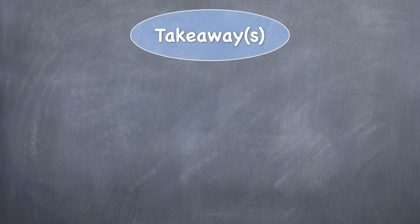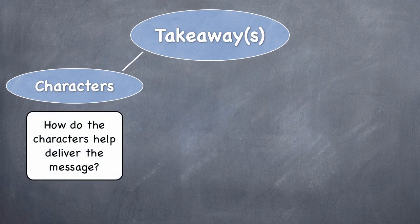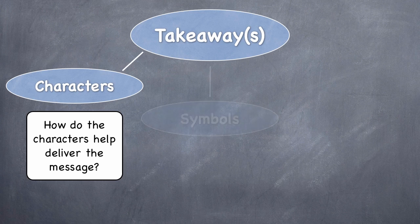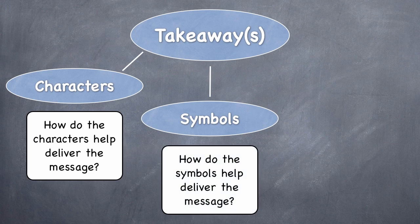So let's say, for example, we could use characters to discuss the takeaway or takeaways. We could use characters and this section would deal with the question: How do the characters help deliver the message? Because the takeaway is really the message, and that's exactly the question we'll be answering in that section. Next we could talk about symbols. There's symbolism in virtually any literature. So how do the symbols help deliver the message? This is the question we're going to be answering in this section.